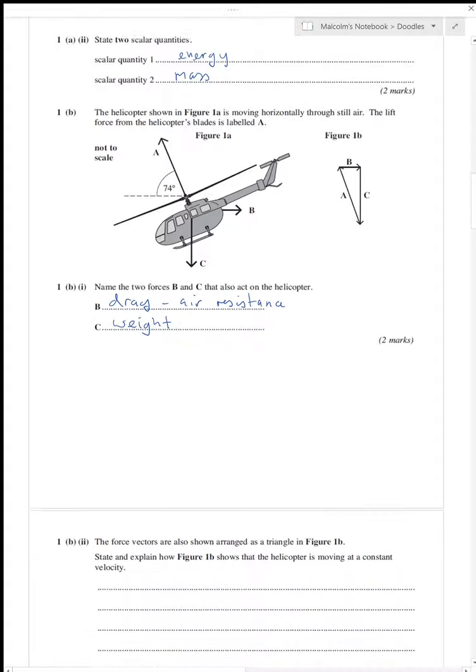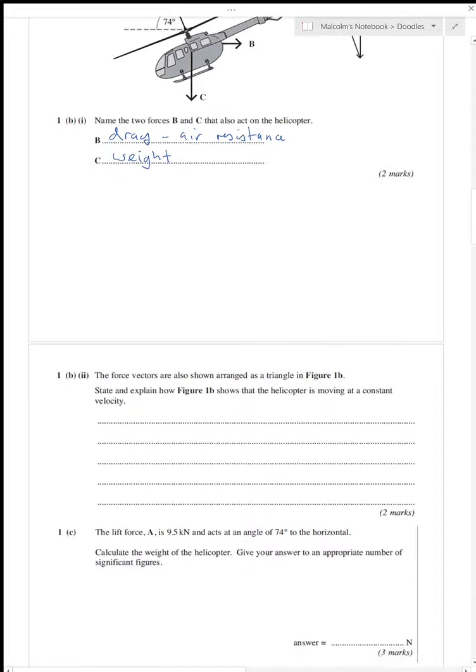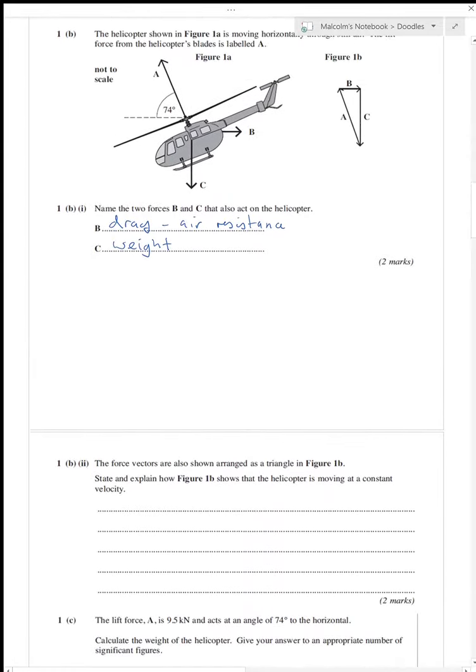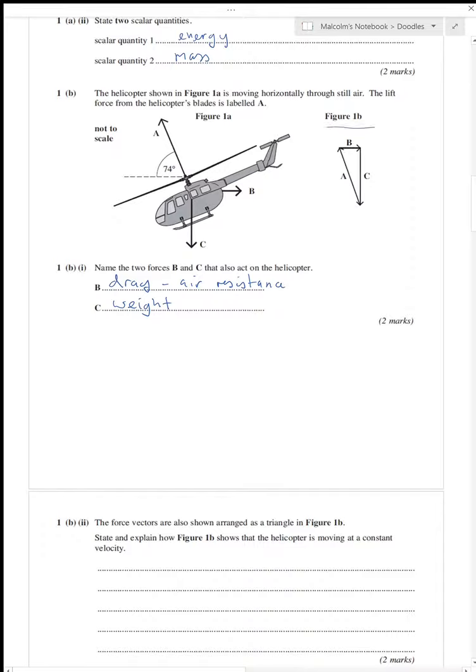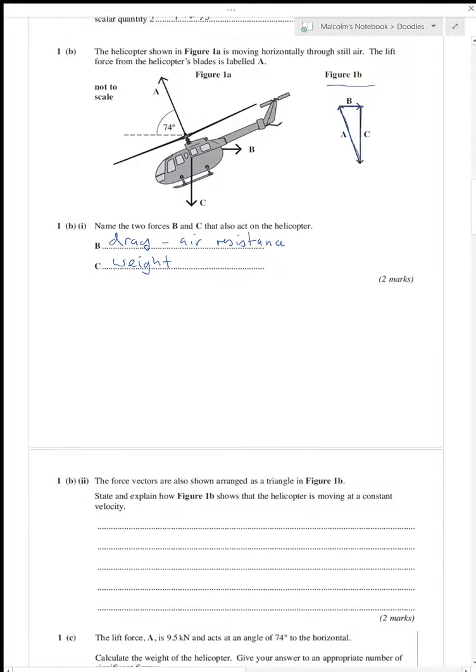Vectors are arranged in a triangle in Figure 1b. State and explain how that shows that the helicopter is moving at a constant velocity. So this is a closed triangle. If I start from here, I go up A, across B, and down C, back to where I started. That implies that these forces are balanced.